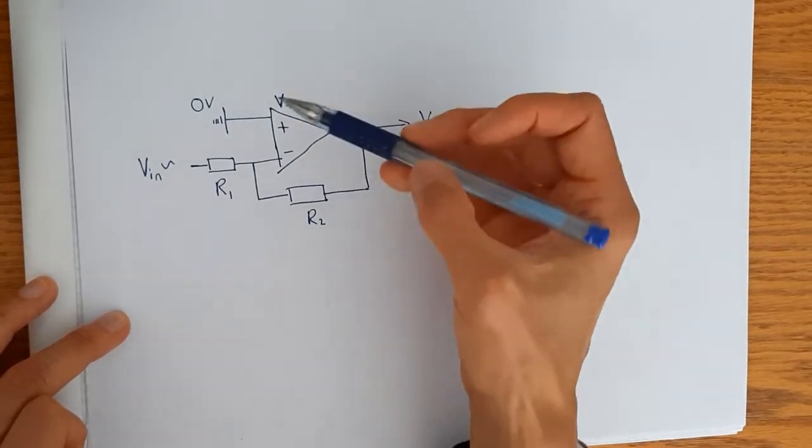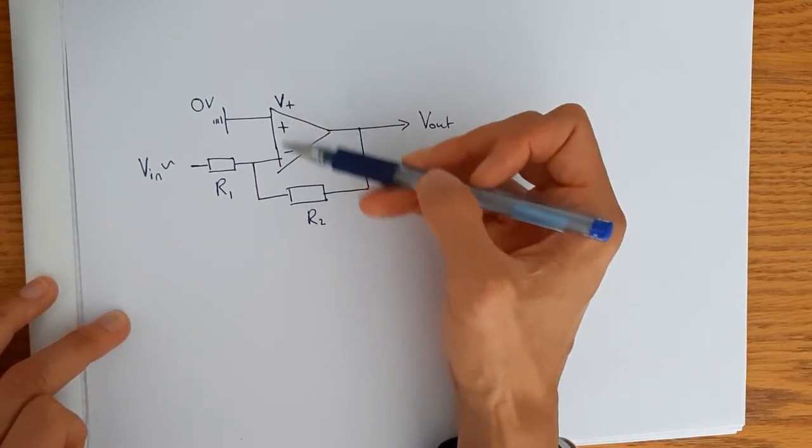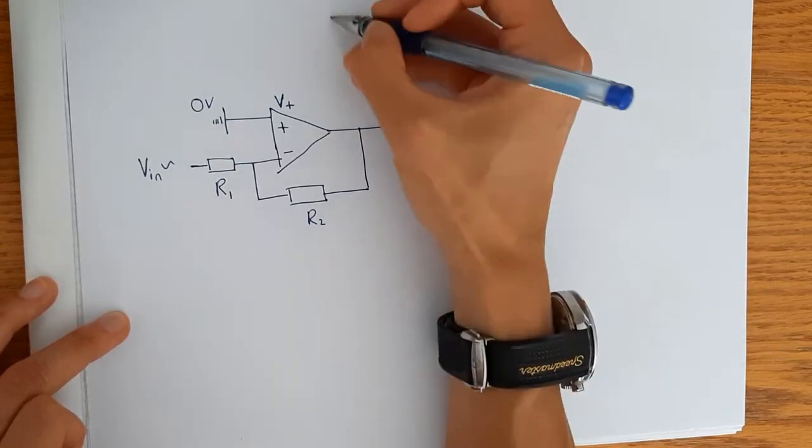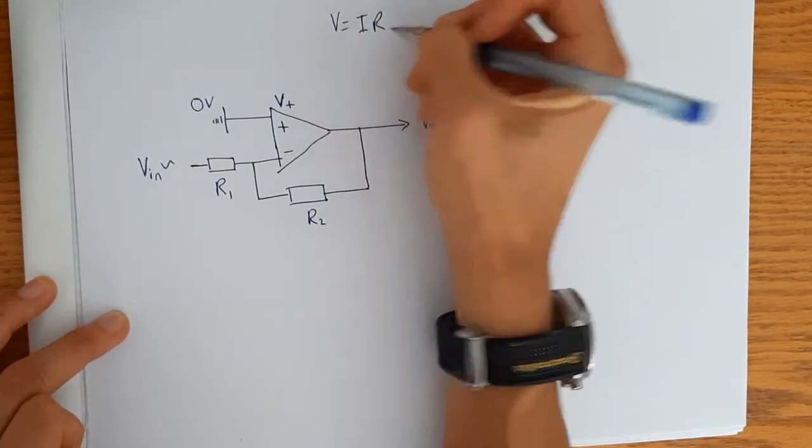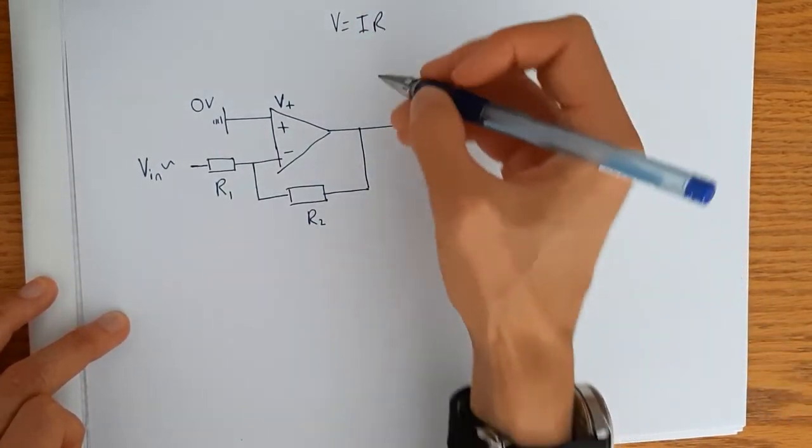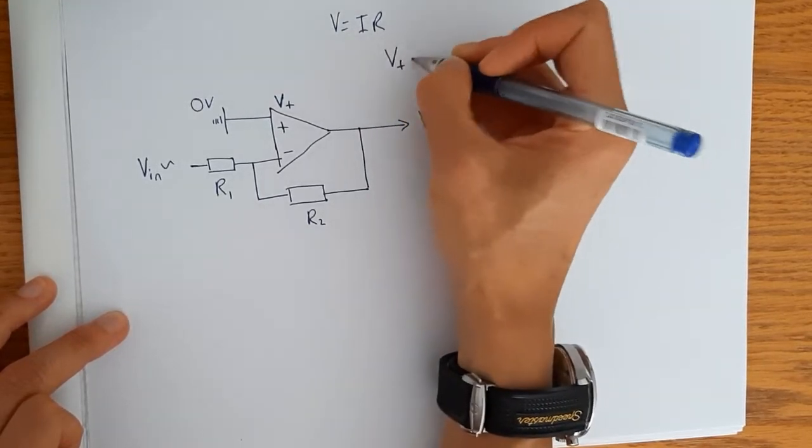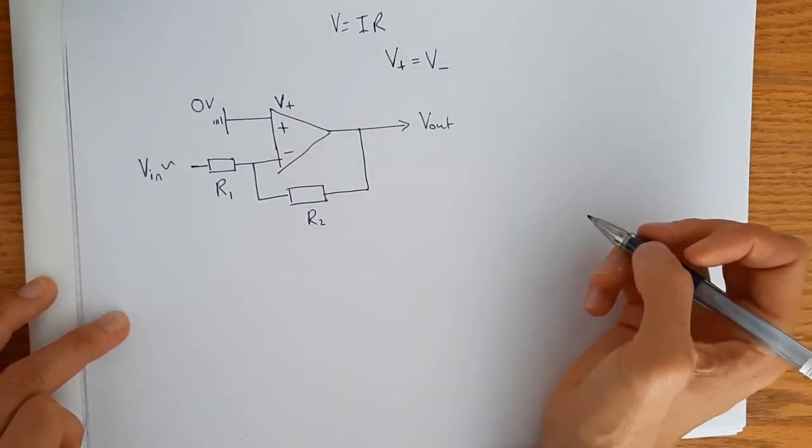Again, the same rules apply. So no current flows between these two pins. The resistance is infinite. I need to know Ohm's law V equals IR. And I need to know that feedback drives V plus to be equal to V minus.